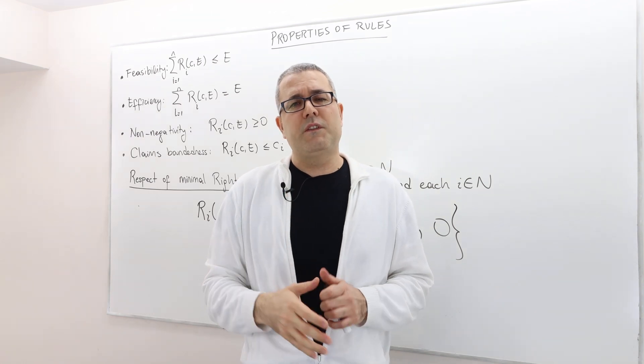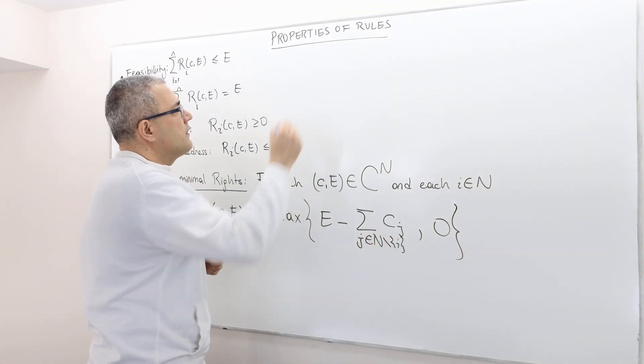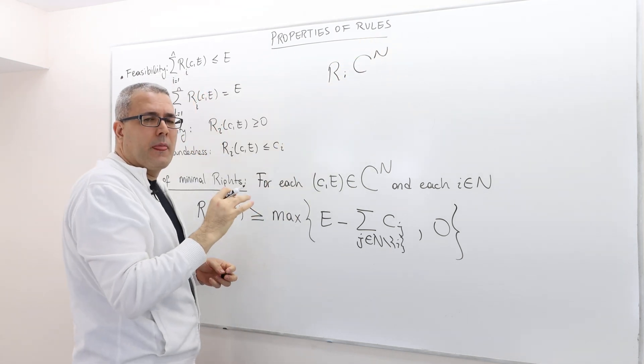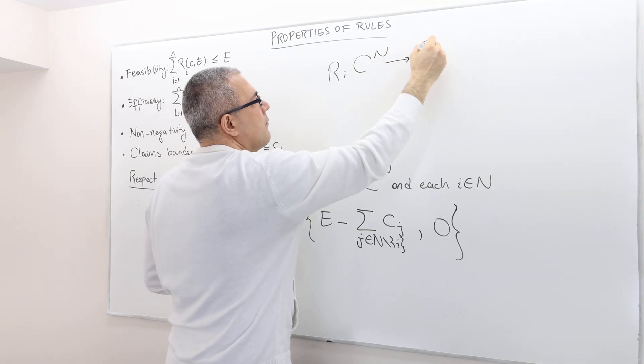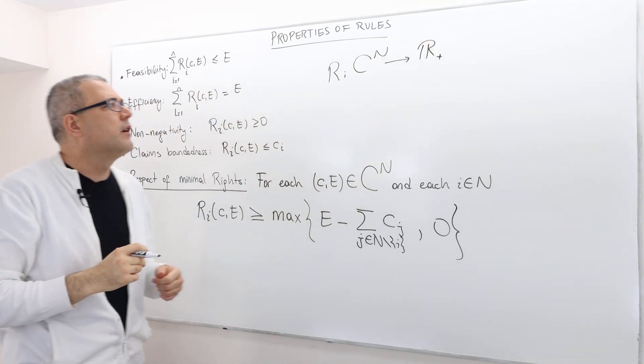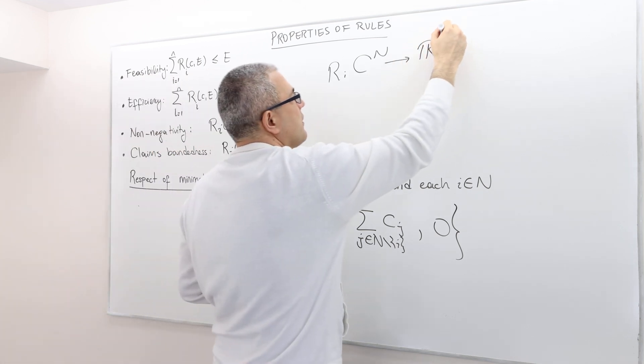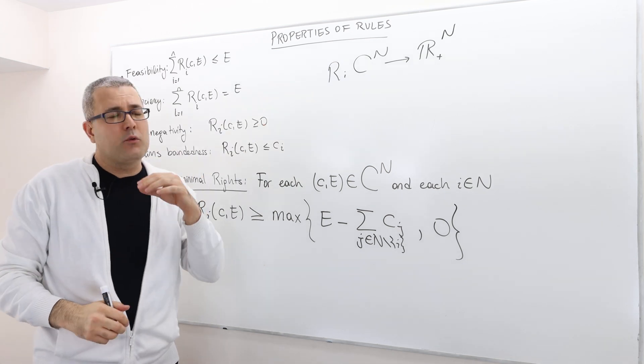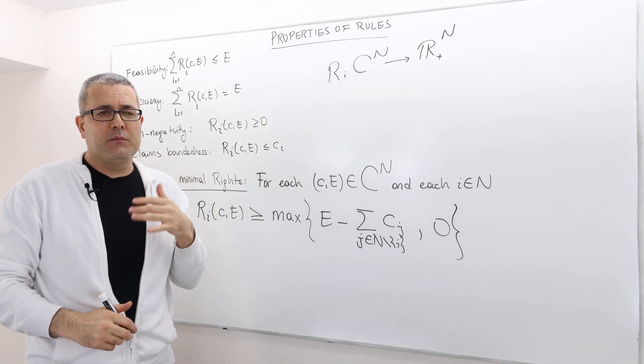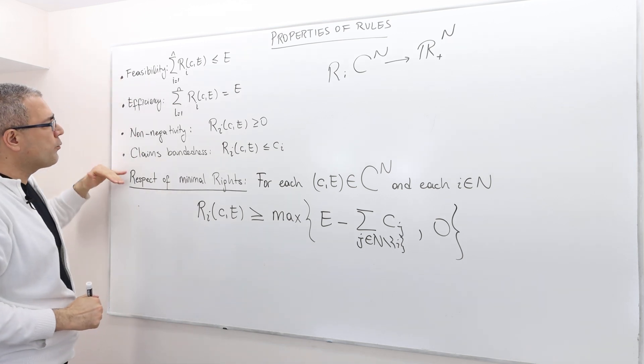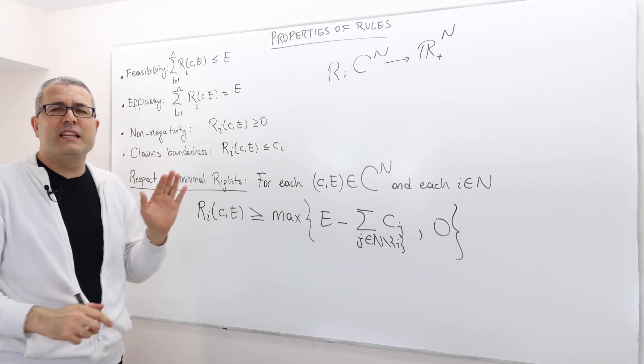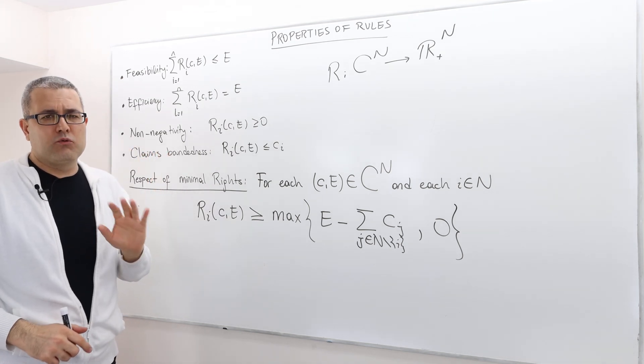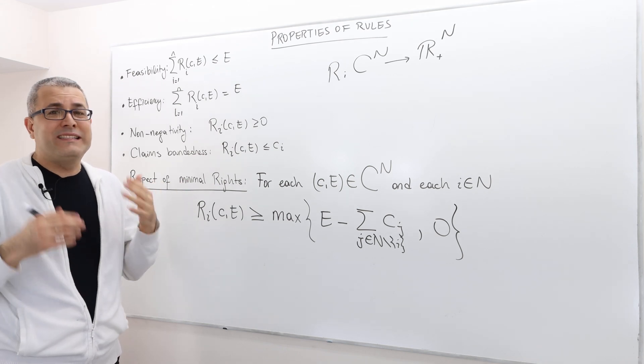If you remember, we said the division rule is a function R which maps every claims problem into some non-negative vector of n dimension. We want this to be specific about a function which satisfies some nice properties. So the first four properties, we already mentioned some of them, we just did not name them. We want all of our rules to satisfy them by default.